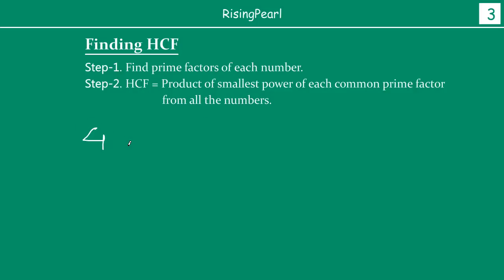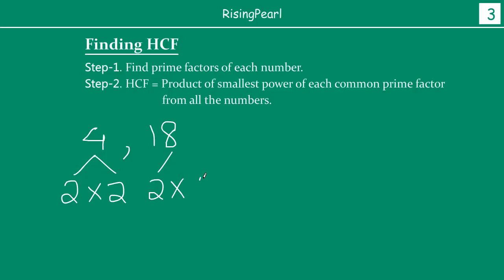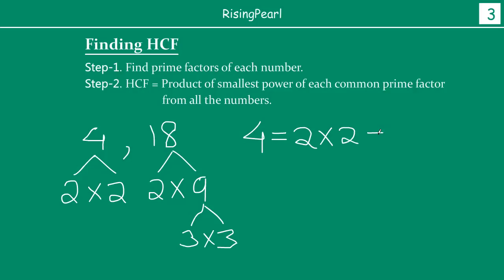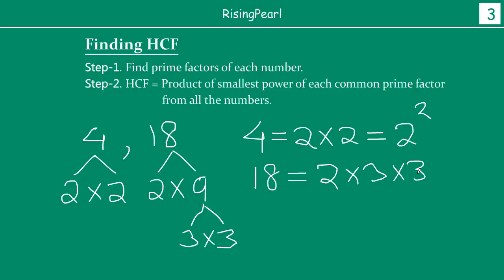So let's start with our example: 4 and 18. We want to find out the HCF of 4 and 18. First step is to find out the prime factors. We can write 4 as 2 times 2, and we can write 18 as 2 times 9, and 9 as 3 times 3. So the number 4 can be written as 2 to the power 2, and the number 18 can be written as 2 times 3 to the power 2, because the number 3 appears 2 times.